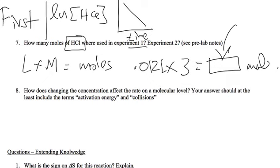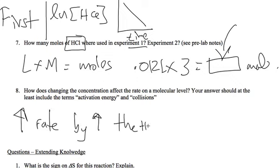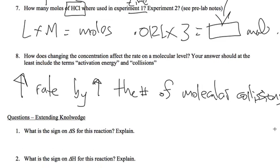How does changing the concentration affect the rate on a molecular level? It increases rate by increasing the number of molecular collisions.